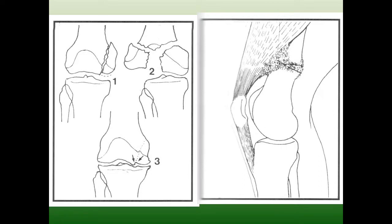Periarticular fractures are not within the joint but very close to it. Most treatment methods require immobilizing the nearby joint — except when a plate is applied surgically, in which case earlier rehabilitation is possible. In most cases, prolonged fixation in plaster of Paris or external fixation is needed, but the joint prognosis is good because osteoarthritis does not develop.